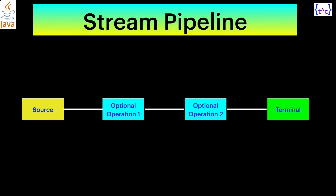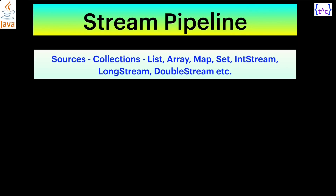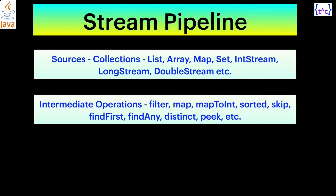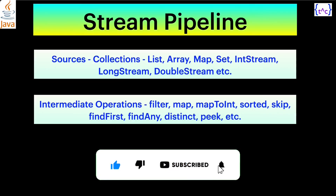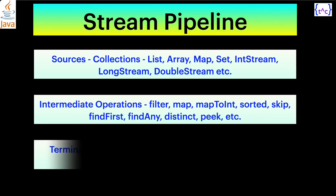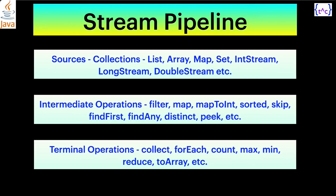These optional operations are always zero or more — there can be no optional operation or there can be n number of optional operations. Sources can be collections such as List, Array, Map, Set, IntStream, LongStream, DoubleStream, or I/O resources. Intermediate operations can be zero to many — examples include filter, map, mapToInt, sorted, skip, findFirst, findAny. Source and terminal operations are mandatory; intermediate operations are optional.